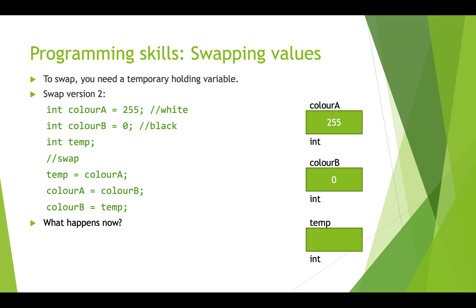What we need to do when swapping values between two variables is always use a temporary holding variable — I just call it temp by default. We now have this third variable called temp; we don't even have to put anything in it yet. A swap involves three steps: put one color into temp, switch the other color into the first variable, then copy what was in temp into the second variable.